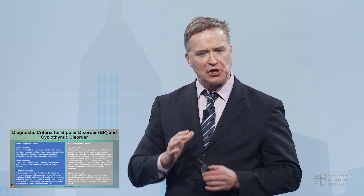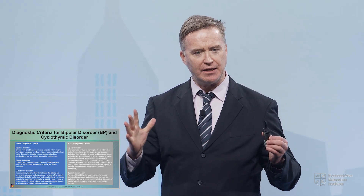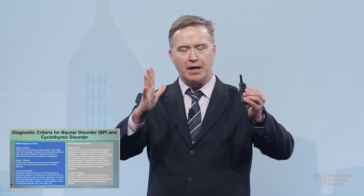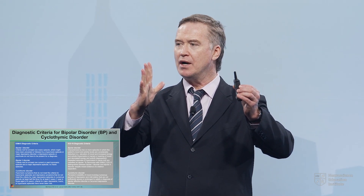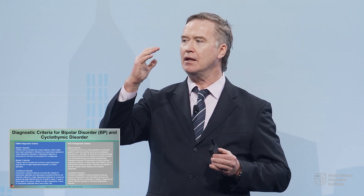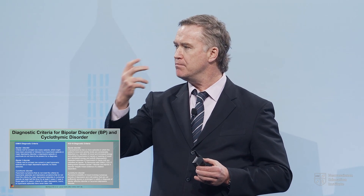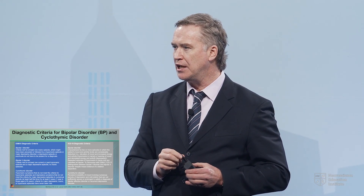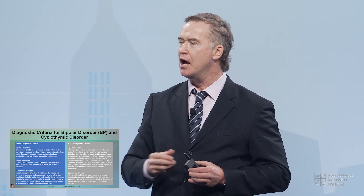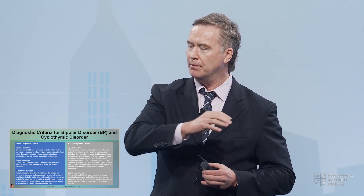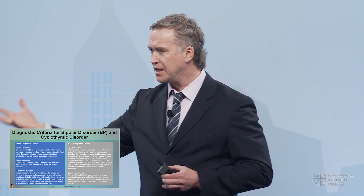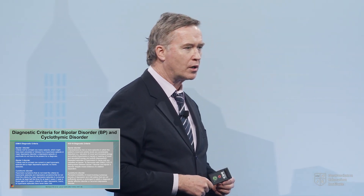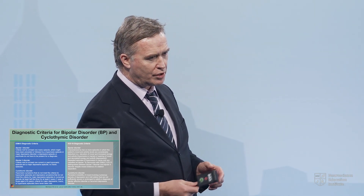In other words, what the authors of DSM-5 did is they narrowed the goalposts a little bit. They said being moody is not enough — there has to be mood and there has to be an increase in activity and energy, along with the other symptoms: three of the seven items listed in the DSM, or four if your mood is irritable.